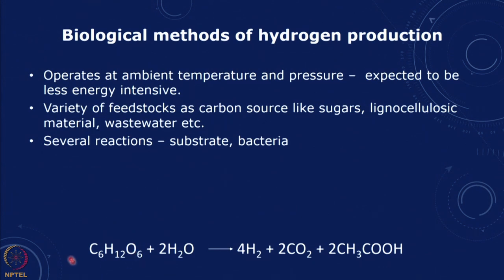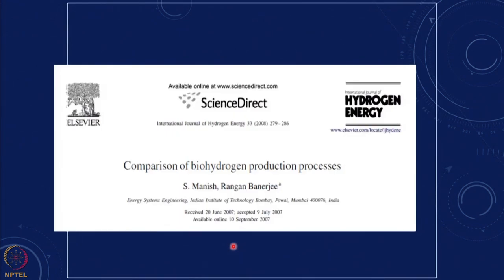You have basically the biological feedstock something like C6H12O6 with water giving you hydrogen, CO2 and then another compound. This is the hydrogen that we would separate and use. This is a slightly old paper from 2008, a comparison of biohydrogen production processes. All these processes today are still at the laboratory scale. Based on what has been done at laboratory scale and the performance, can we assess whether these are likely to be viable and how do they compare from an energy or net energy point of view?